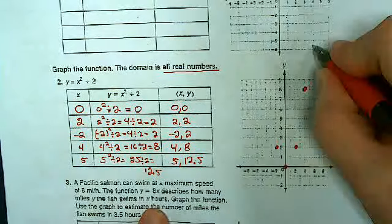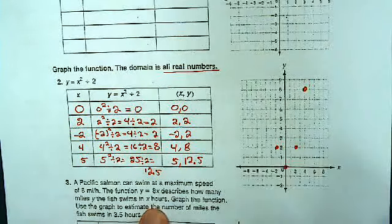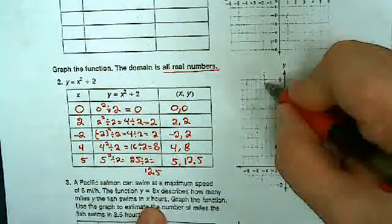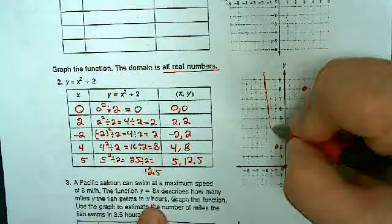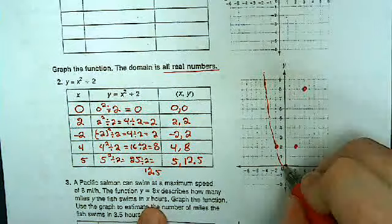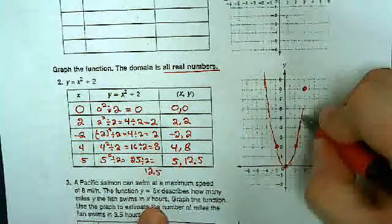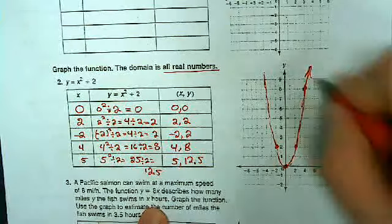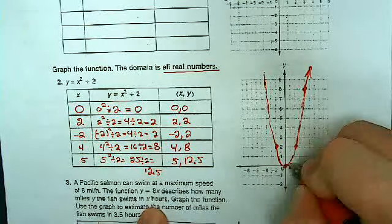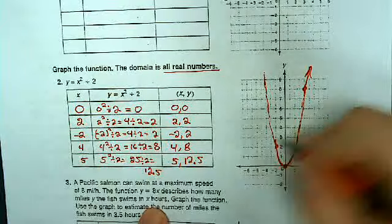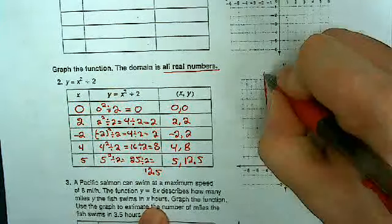5, uh, 12 and a half is up here somewhere. And it looks like when I graph it, it's going to look something like that. Like a V, but it's going to have a bit of a curve down here at the bottom. And that curve becomes more evident if I put more points to illustrate that.